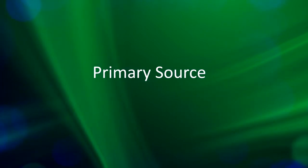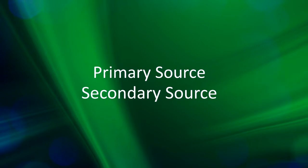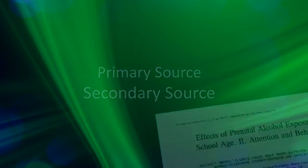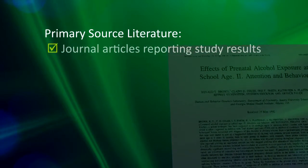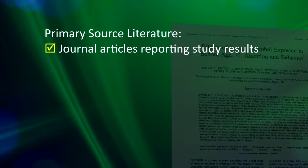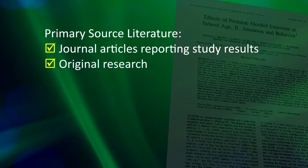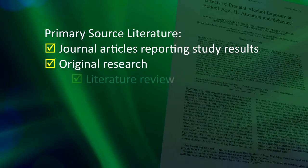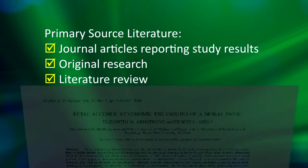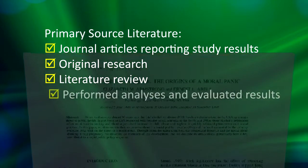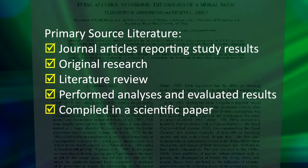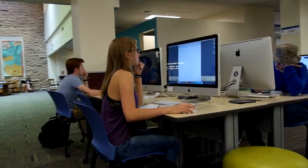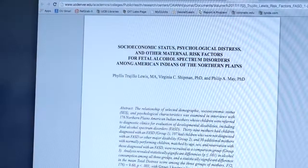Scientific literature falls into two broad categories: primary source and secondary source. Primary source scientific literature is, generally speaking, journal articles reporting study results. The authors conducted original research — they did a literature review, performed analysis, evaluated their results in the context of their literature review, and compiled it all in a paper consistent with scientific studies. Your literature search will focus only on primary source literature.